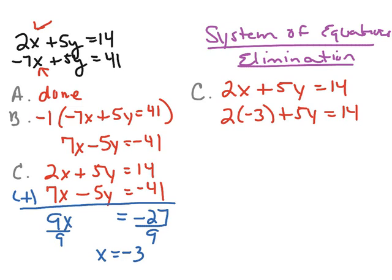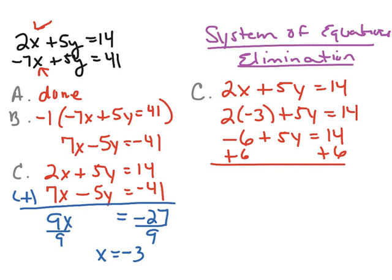I now have the equation 2 times negative 3 plus 5y equals 14, and I'm going to solve for y. I'll start by multiplying 2 times negative 3, which is negative 6. Now I'm going to add 6 to both sides. 14 plus 6 is 20. Now I can divide both sides by 5, and 20 divided by 5 is 4. So I now know the y value is 4.